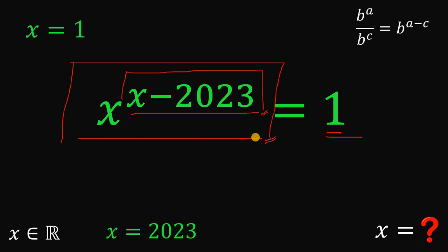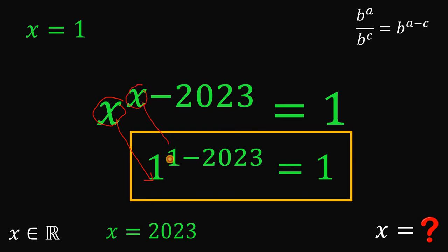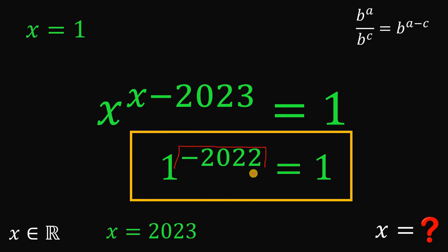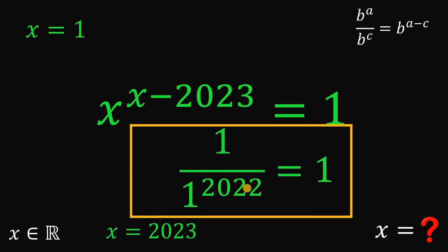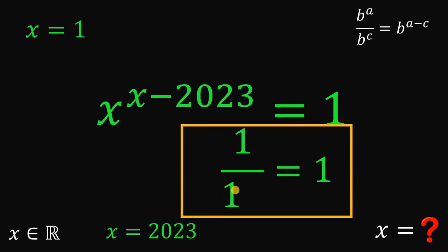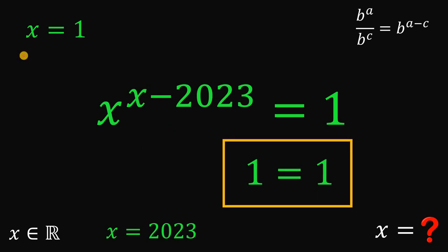So what value of x makes x raised to the power of x minus 2023 equal to 1? Let's try x equals 1. Replacing all x with 1: we get 1 raised to the power of 1 minus 2023, which gives us negative 2022. Taking the reciprocal, we have 1 over 1 raised to 2022, and 1 raised to 2022 simplifies to 1. So we get 1 over 1, which is 1. Therefore x equals 1 is another solution.